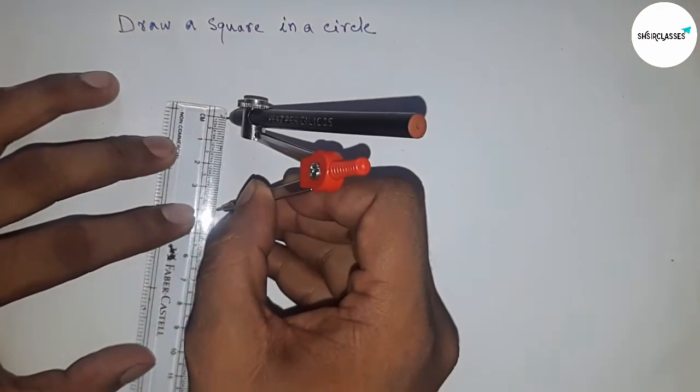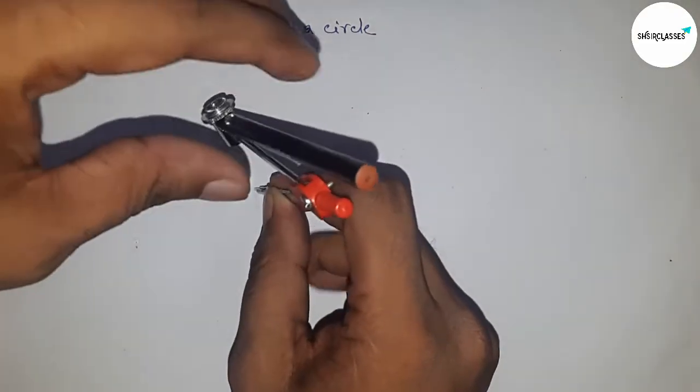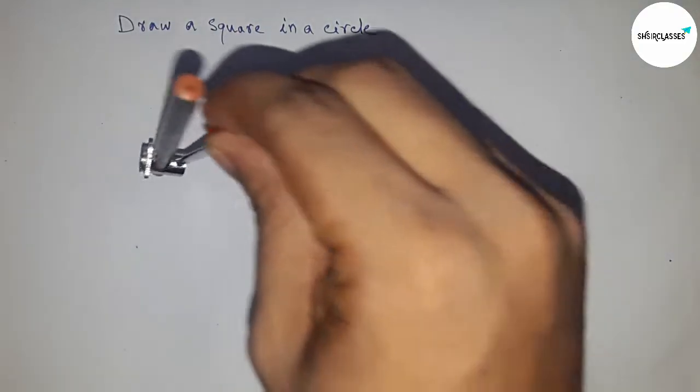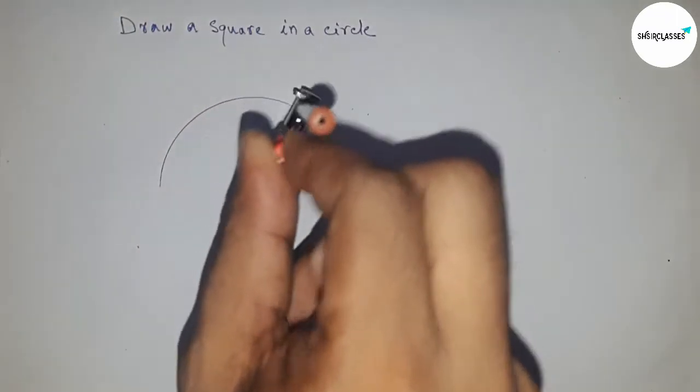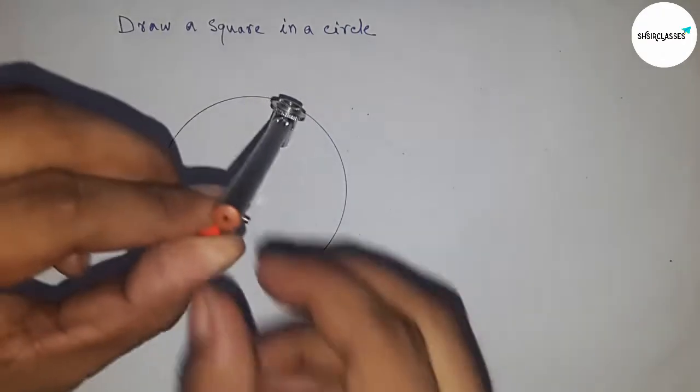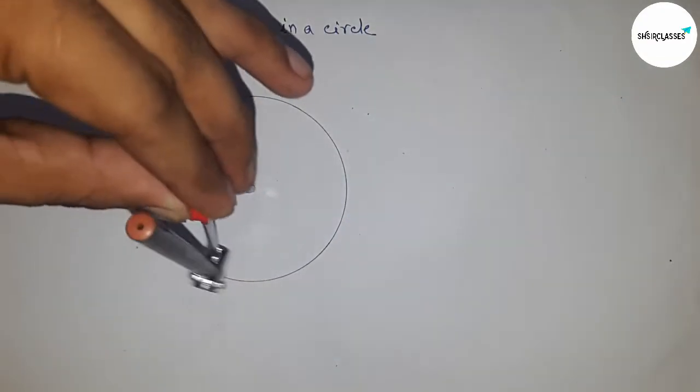First of all, take a radius of 4 centimeters. Put the compass here and draw a circle with radius 4 centimeters.